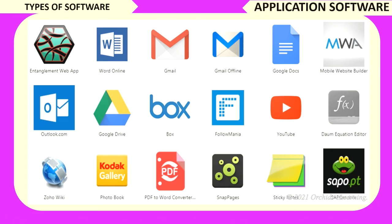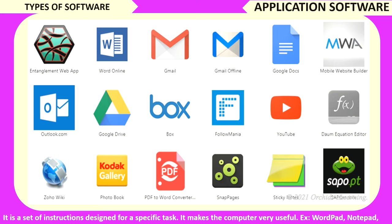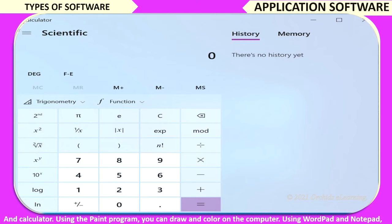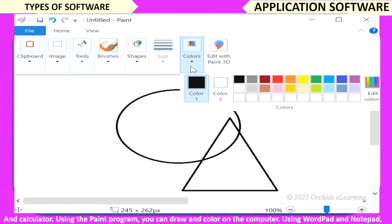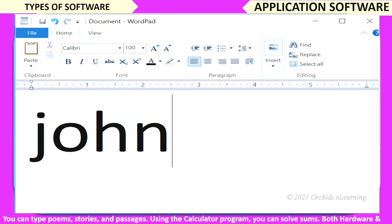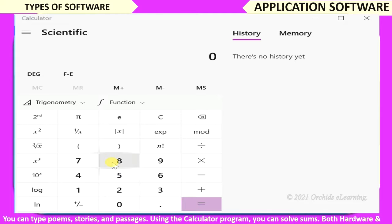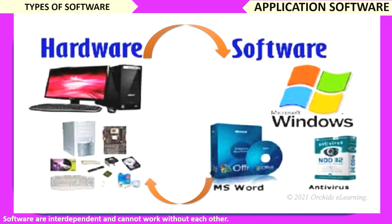Application software is a set of instructions designed for a specific task. It makes the computer very useful. Example: WordPad, Notepad, and Calculator. Using the Paint program, you can draw and color on the computer. Using WordPad and Notepad, you can type poems, stories, and passages. Using the calculator program, you can solve sums. Both hardware and software are interdependent and cannot work without each other.